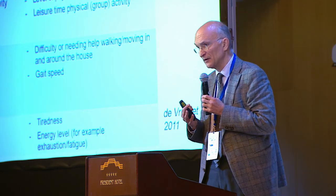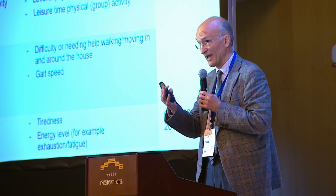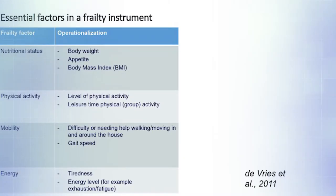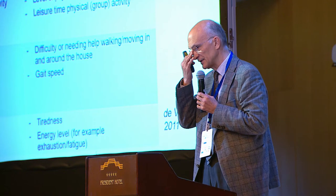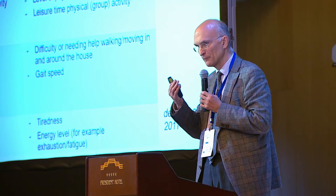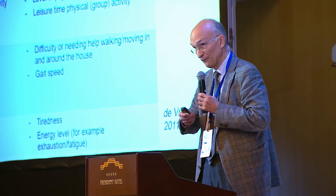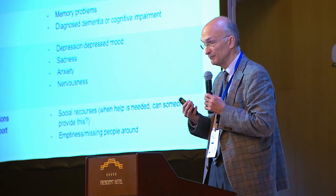Which are the essential factors in a frailty instrument? There are eight. Nutritional status, as I just said; physical activity; mobility; energy — the feeling of energy; strength — muscle strength; cognition; mood; and also, not to be forgotten, social relations and social support, which is very important.